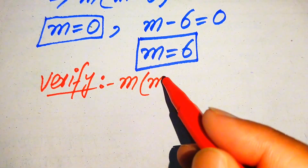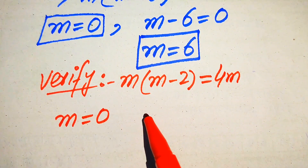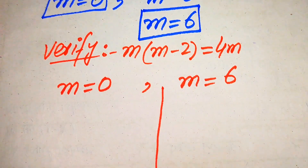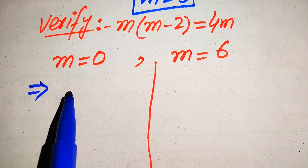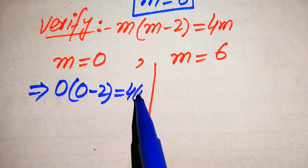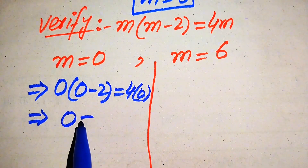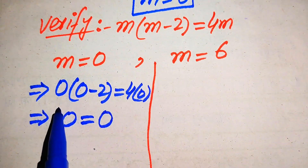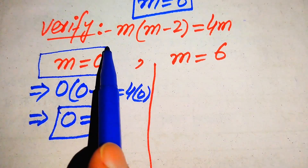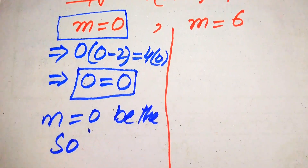For verification, we copy the given equation: m times of m minus 2 equals to 4 times of m. When we substitute m equals to 0, it becomes 0 times of 0 minus 2 equals to 4 times of 0. Zero multiplied by any number is 0, so both sides equal 0. Left hand side equals right hand side, so m equals 0 is a solution of the given equation.